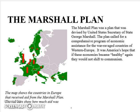Next, we'll look at the Marshall Plan, devised by United States Secretary of State George Marshall — that's where its name comes from. The plan called for a comprehensive program of economic assistance for the war-ravaged countries of Western Europe. It was America's hope that if these economies became healthy again, they would not shift to communism. After World War II, much of Europe was rebuilding, and if the United States supplied these economies with materials and economic resources, they would see the U.S. as friendly.